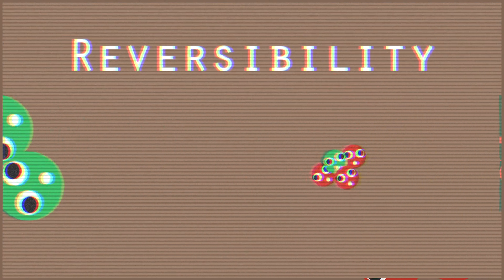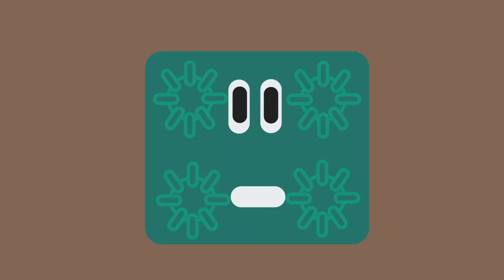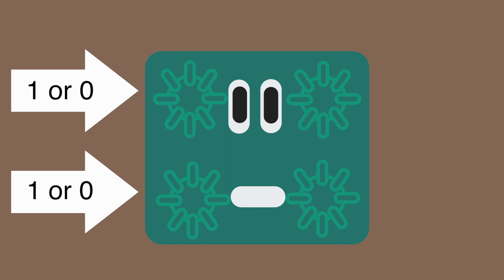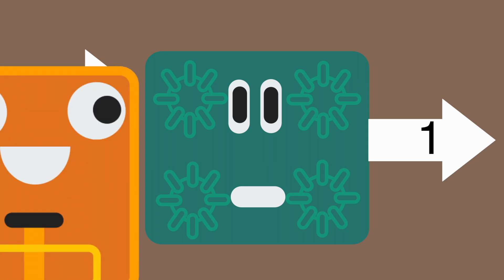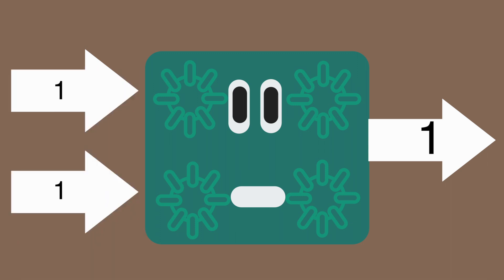What is reversibility, you ask? Here is an operation that accepts two inputs, either of which can be a 0 or a 1. It will output a 1 only if both inputs are 1. If I hide the inputs and you see an output of 1, you know for a fact that both inputs were 1.